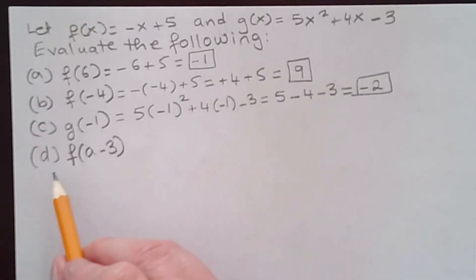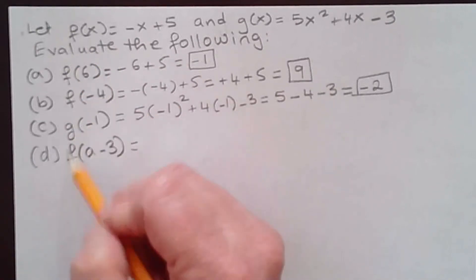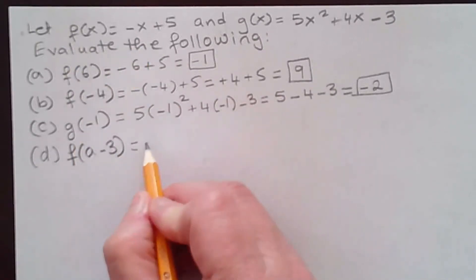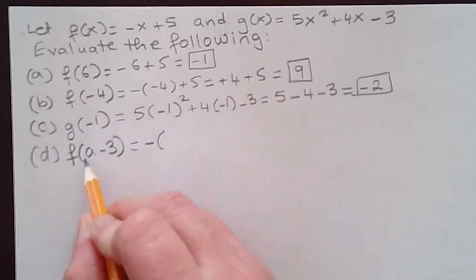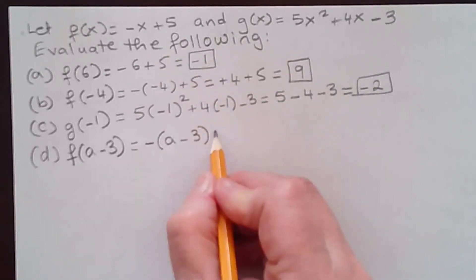Let's do part D now. I need to evaluate f, not for a value like my previous examples, but for an expression: a - 3. Whenever I find x, I need to replace it with a - 3. So I have the f function. That's negative, replace x with (a - 3), and don't forget the plus 5.